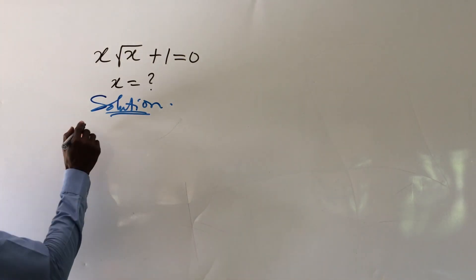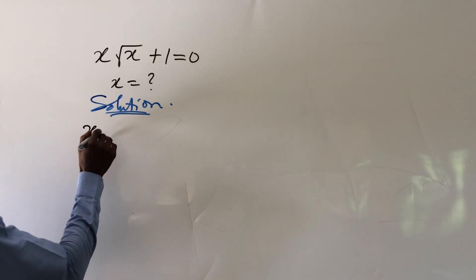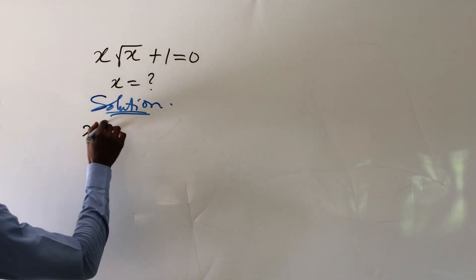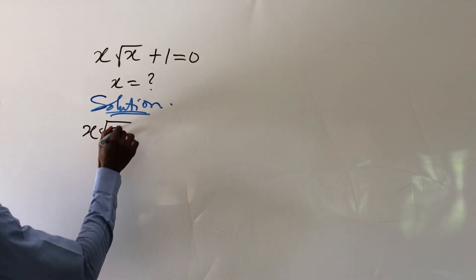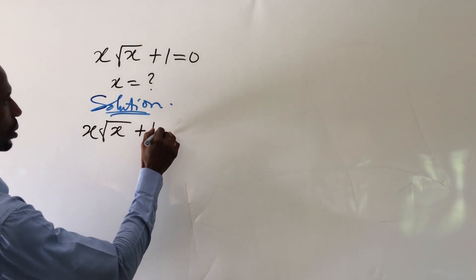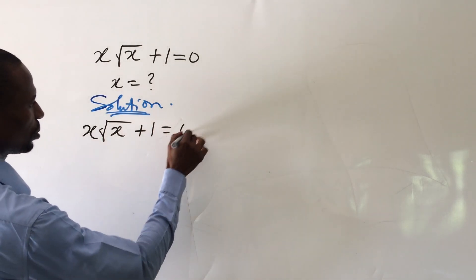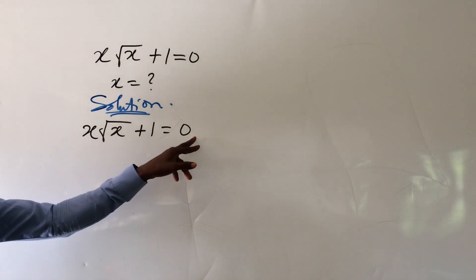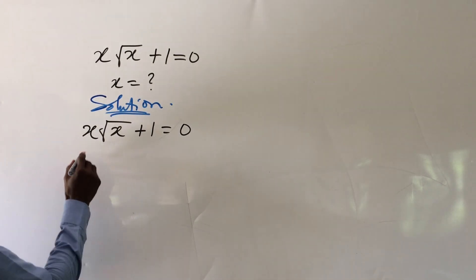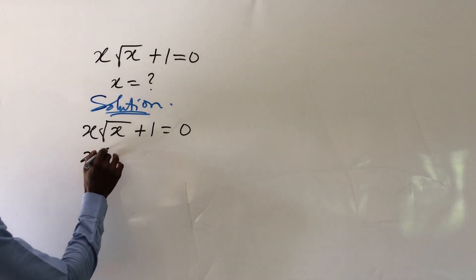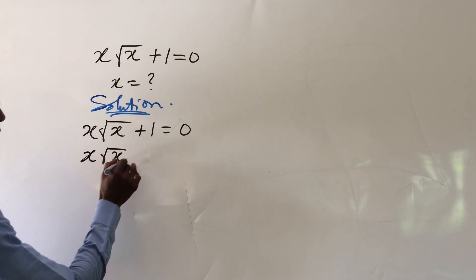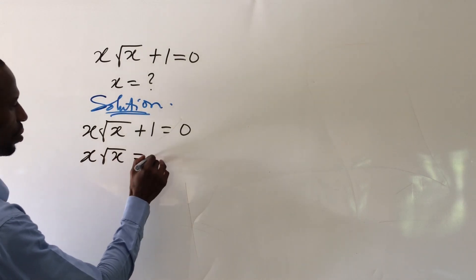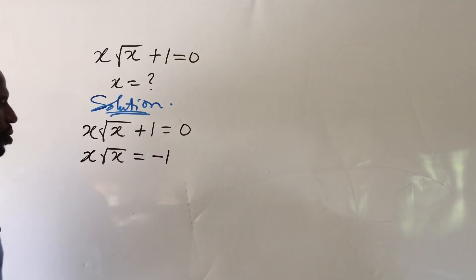We put down our question, which is x times the square root of x plus 1, equal to 0. From here, let's send the 1 to the other side of the equation, and so we're left with x times the square root of x equal to minus 1.